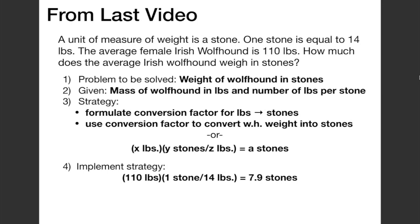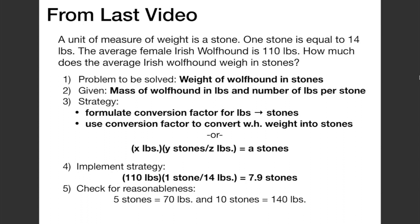To estimate if this is reasonable, we look to see how much 5 stones equals in pounds and how much 10 stones equals in pounds. 5 stones equals 70 pounds, and 10 stones equals 140 pounds. So 7.9 stones is in between 5 and 10 stones, and 110 pounds is in between 70 and 140 pounds. So it makes sense.